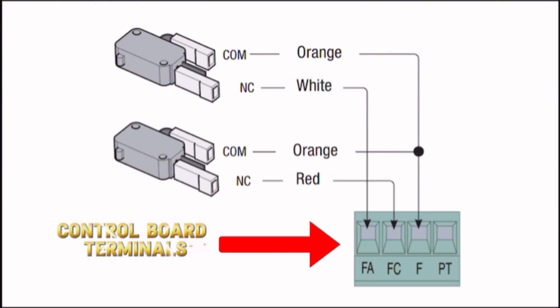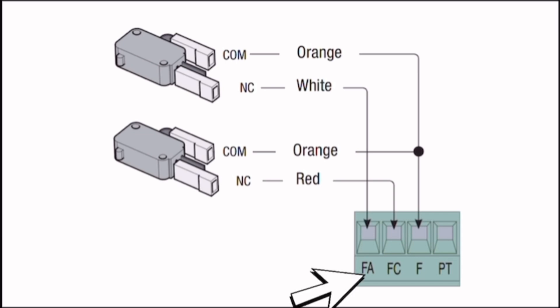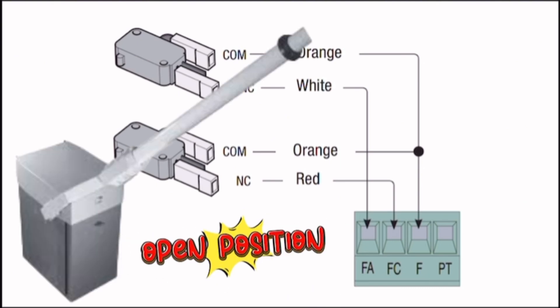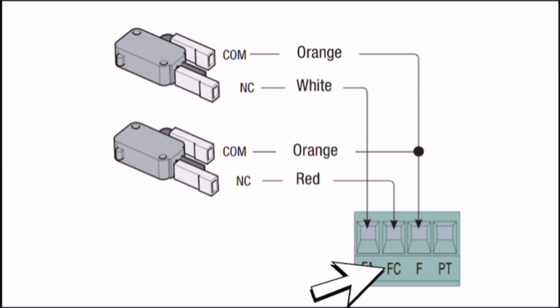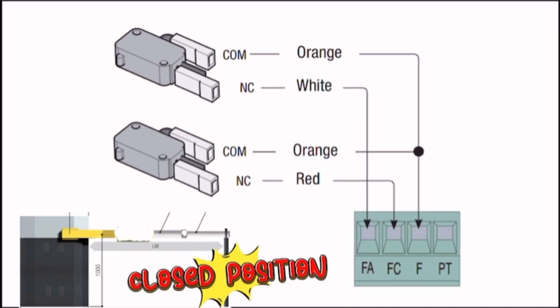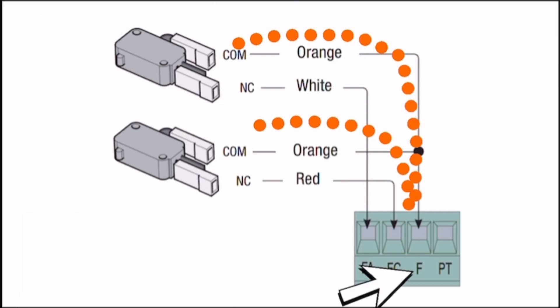Control Board Terminals: The control board has four labeled terminals. F.A. - Fully open position of the gate door. F.C. - Fully closed position of the gate door. F. - Shared Terminal Common Ground for Limit Switches.